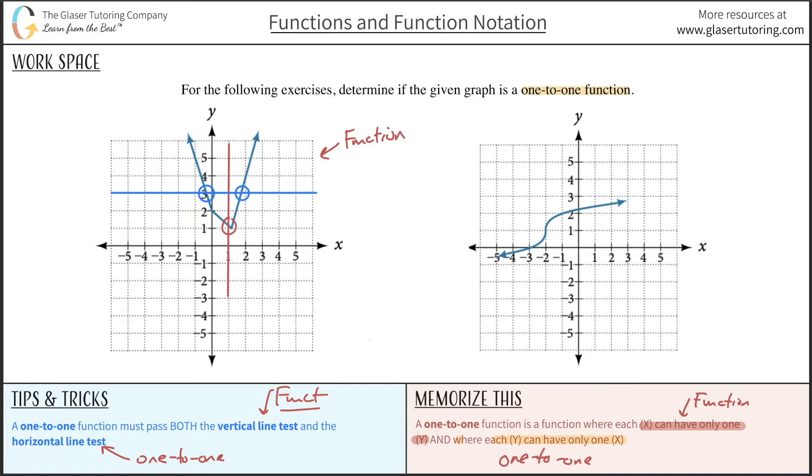So as soon as it intersects two or more times on the horizontal line test, it is not a one-to-one. So this is now not a one-to-one.